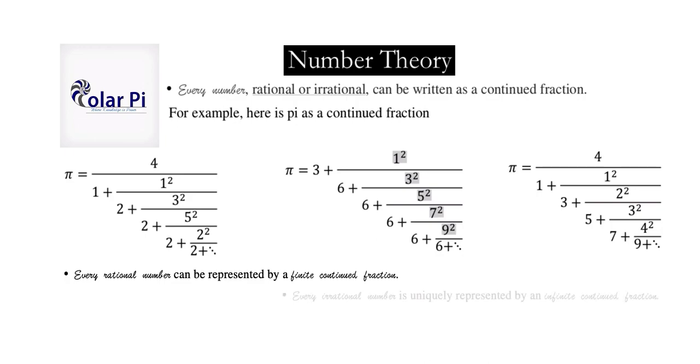Every rational number can be represented as a finite continued fraction. And every irrational number is uniquely represented as an infinite continued fraction. Now the uniqueness is not saying that pi here has three different representations. The uniqueness is saying that none of these three representations can be another number. All three of them have to be pi. So that's what the uniqueness here speaks of.